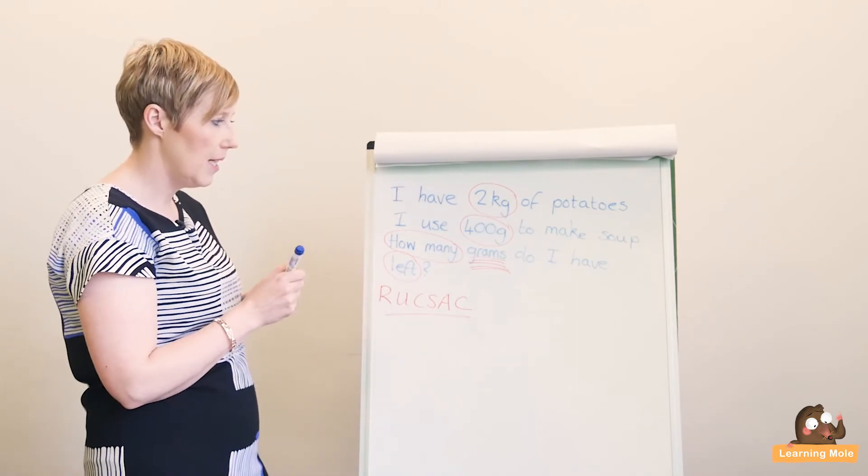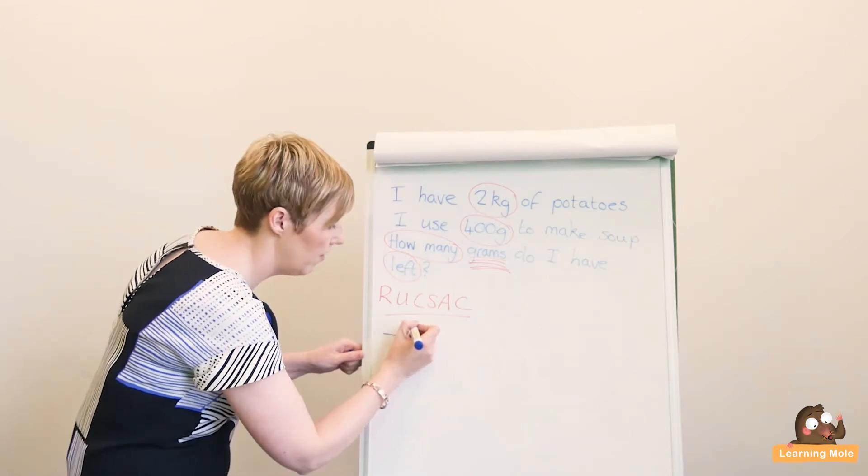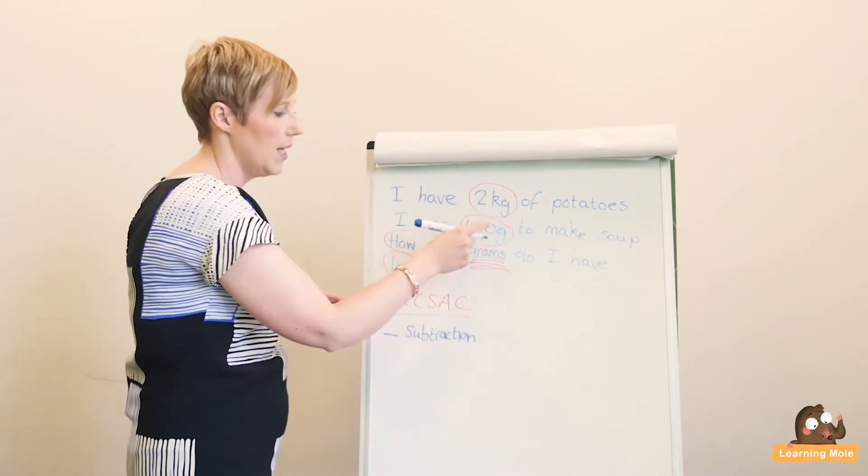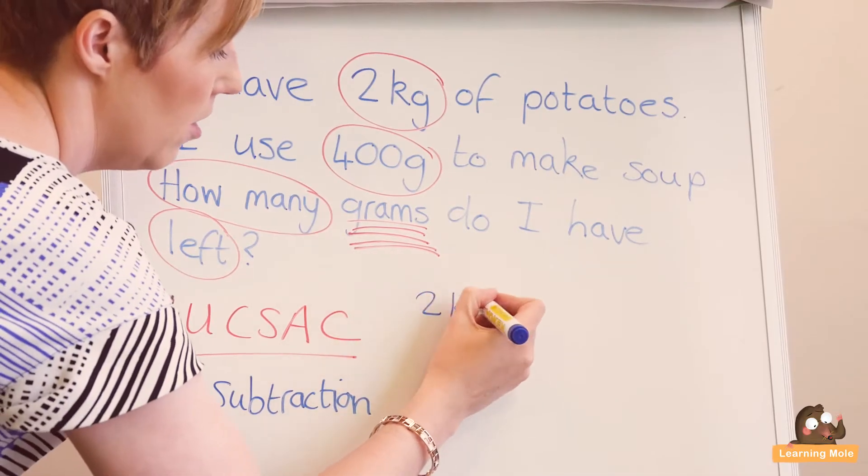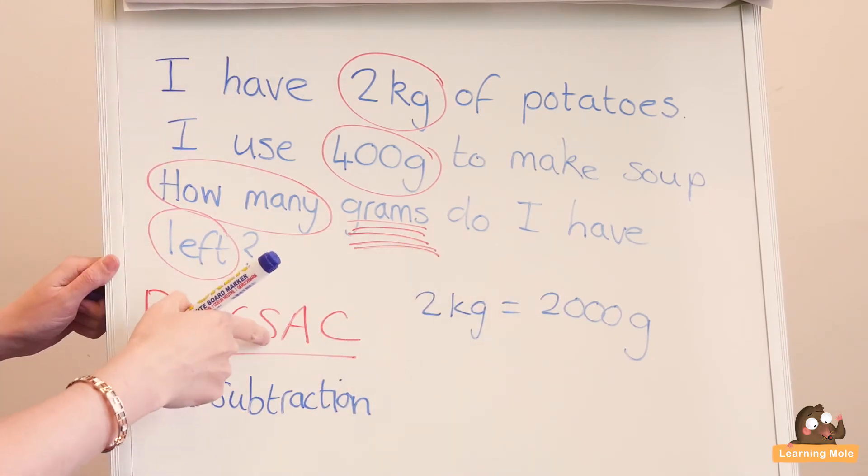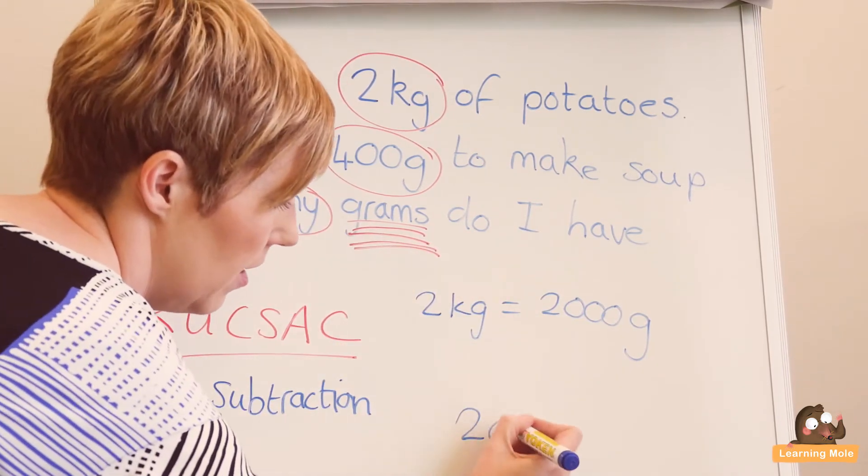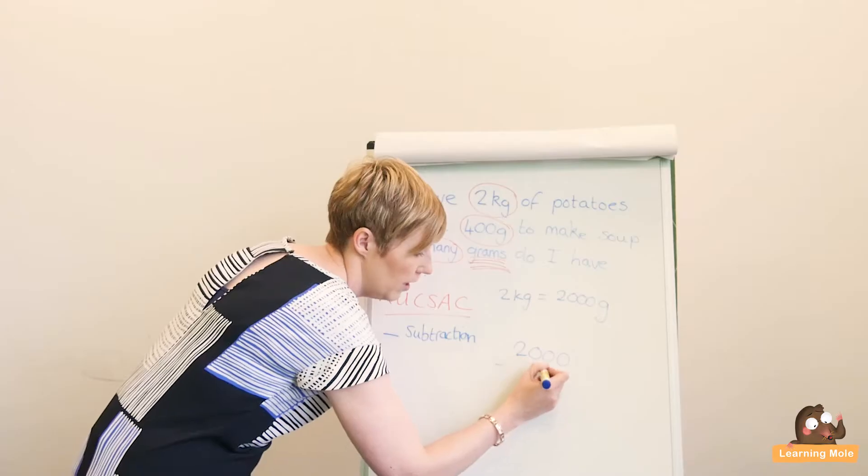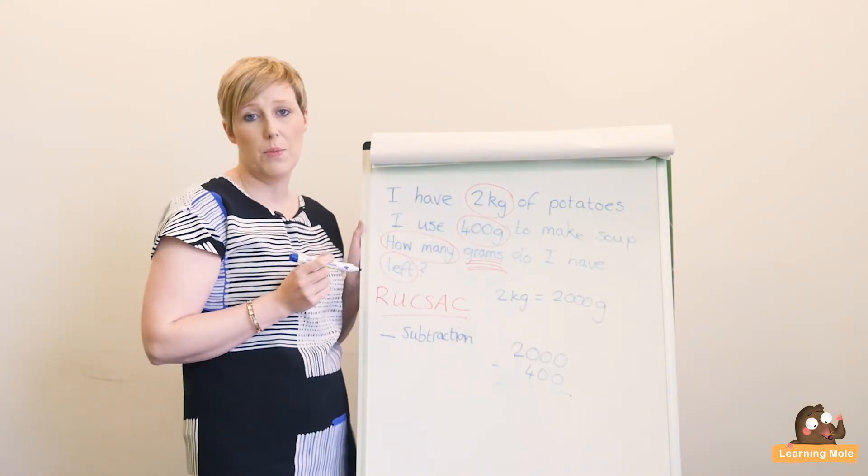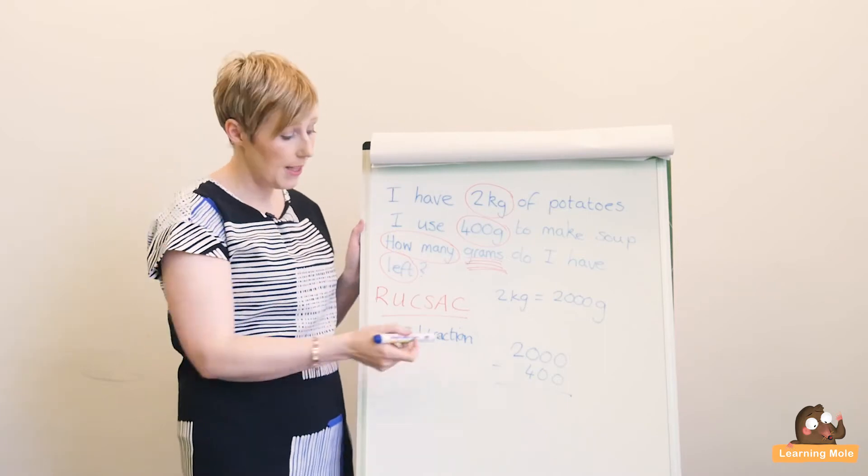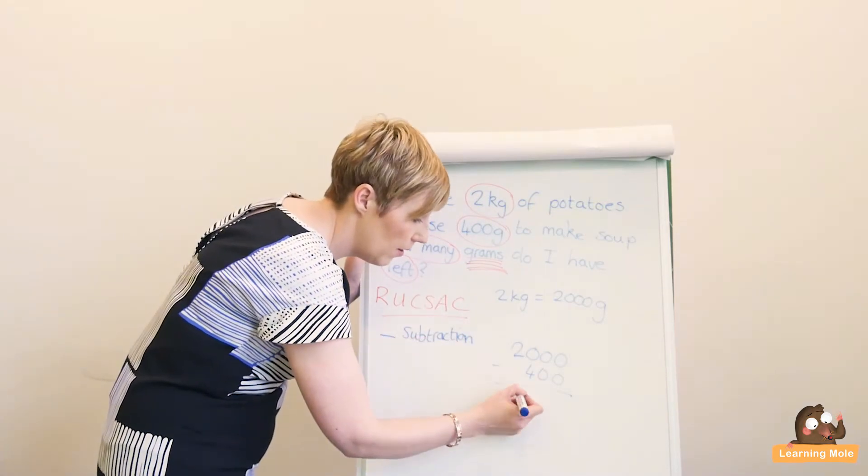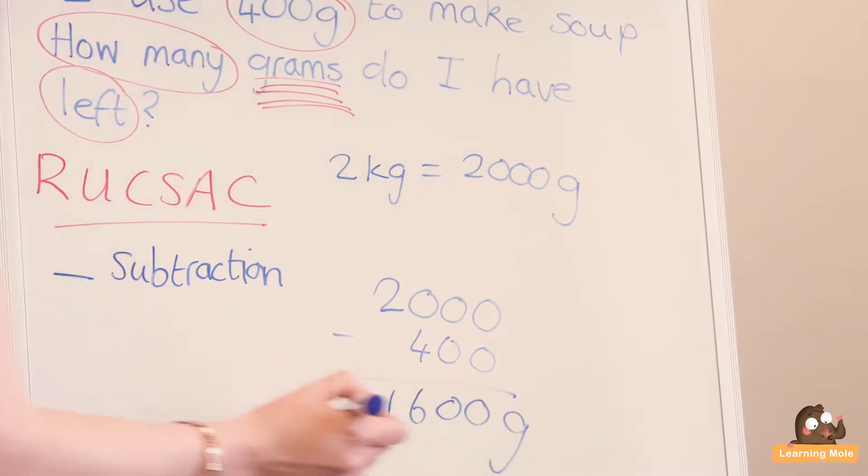We've done the reading, we've done the understanding, we're now going to choose our operation which we know is subtraction. They know that they can't do 2 take away 4, so they know that they have to change that 2 kilograms into 2,000 grams. Now they can do it. They're going to now solve, so they will write their 2,000 take away 400. That can be done as a column subtraction, but most children at this stage will be able to do that mentally. They know that there will be 1,600 left and there is their answer.